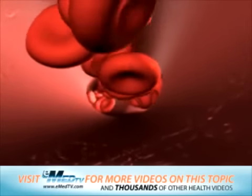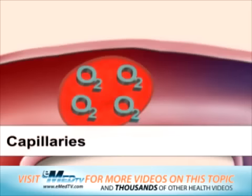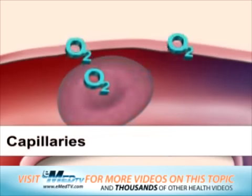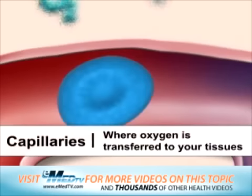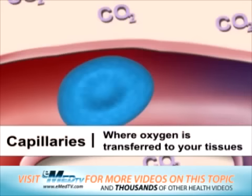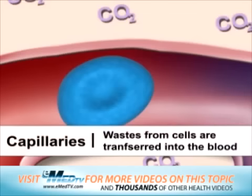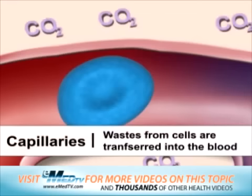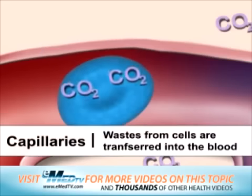The smallest branches are called capillaries, and this is where the oxygen in your blood is transferred to your tissues. In exchange, the wastes from your cells, including carbon dioxide, are transferred into the blood.